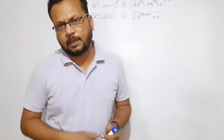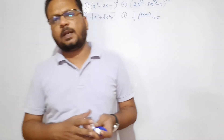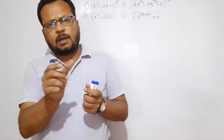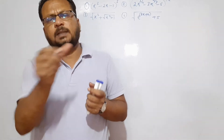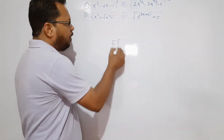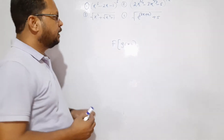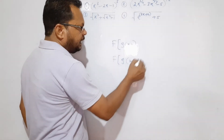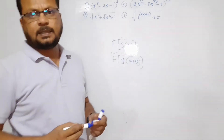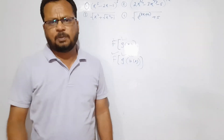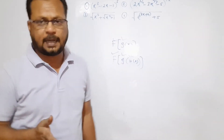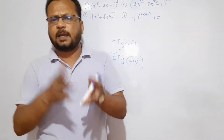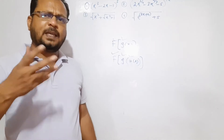Hello friends. Last session covered the derivative of composite functions. In a composite function, x is the inner function attached to the outer function, structured like f(g(x)) or f(g(u(x))) with multiple layers. To find the derivative, you differentiate the outer function with respect to the inner, then multiply by the derivative of the inner function — applying the chain rule layer by layer.